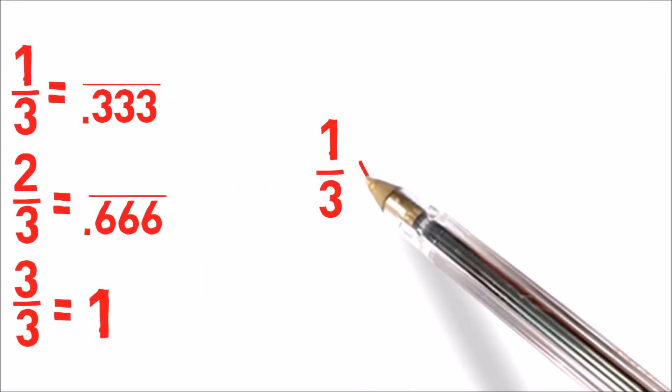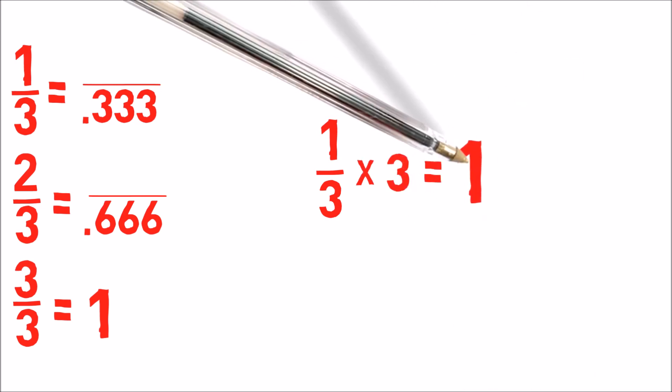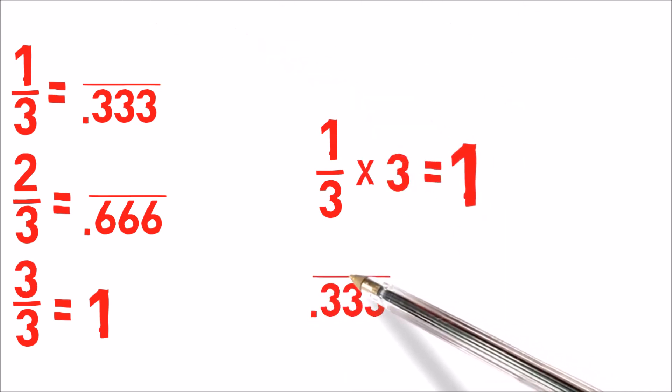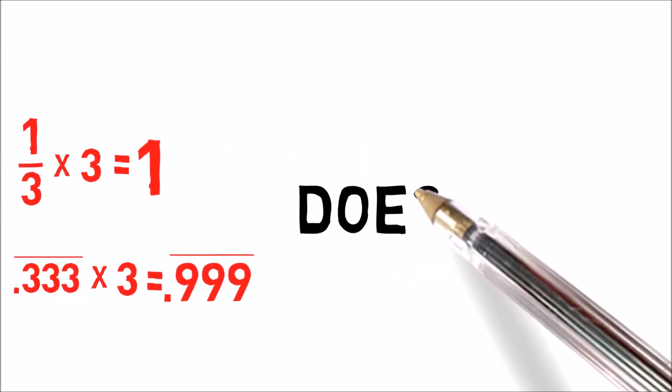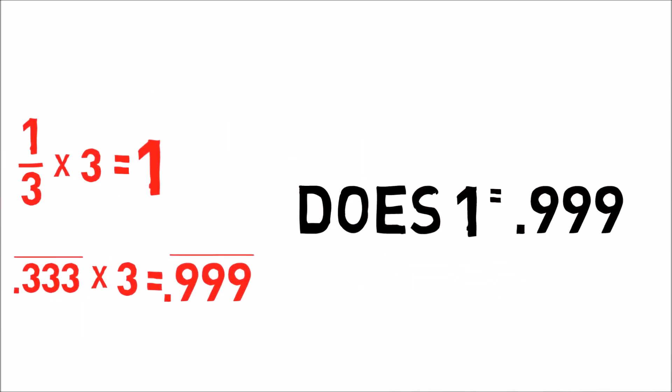1 over 3 times 3 obviously equals 1. But 0.333 repeating forever, which is equal to 1 third, times 3 equals 0.999 repeating forever. The answers to the same question are different. 1 third versus 0.333, they are the same, but they come out with a different answer.